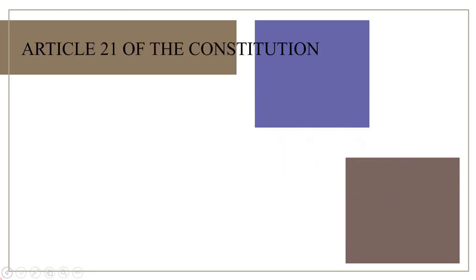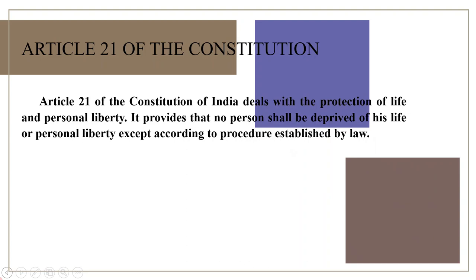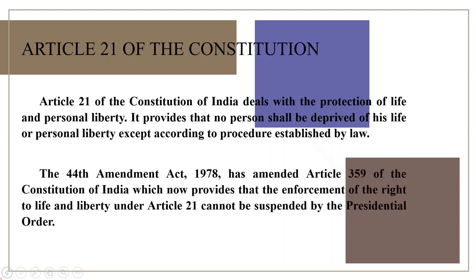Article 21 of the Constitution of India deals with the protection of life and personal liberty. It provides that no person shall be deprived of his life or personal liberty except according to procedure established by law. The 44th Amendment Act 1978 has amended Article 359 of the Constitution of India, which now provides that the enforcement of the right to life and liberty under Article 21 cannot be suspended by presidential order.